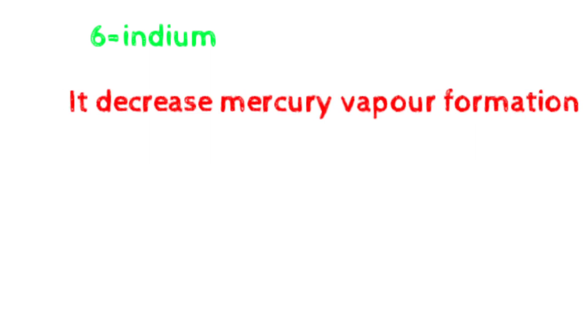Now come to the function of each constituent. We will study the function of each constituent one by one. First, silver. What are the functions of silver in amalgam alloy? Number one, it increases strength of amalgam to withstand masticatory forces in the posterior region. Number two, it decreases creep. Creep is a time-dependent expansion, meaning with time the amalgam becomes expanded. Silver decreases this expansion with time. Third, it decreases tarnish. And number four, it increases setting expansion.